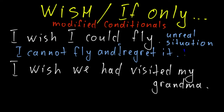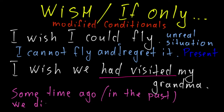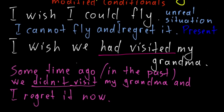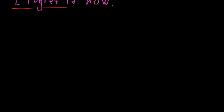What's important is that in 'I wish I could fly,' I regret it in the present — that's a present situation. In the sentence 'I wish we had visited my grandma,' we use past perfect, and the message is that in the past we didn't visit my grandma, and I regret it now. The situation is unreal — it can refer to the present, past, or even the future — but it is unreal, and I regret it. If I regret a situation, I use 'I wish' or 'if only.'